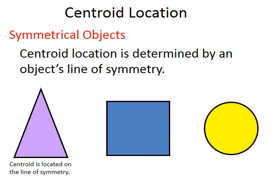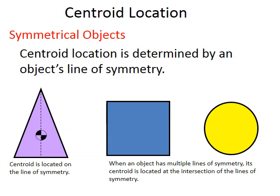Let's look at some common shapes: a triangle, a square, and a circle. A triangle has an axis of symmetry that runs from the top point down to the bottom, so the centroid is somewhere along that line. For a square, if we draw intersecting lines, the centroid is where those lines intersect.